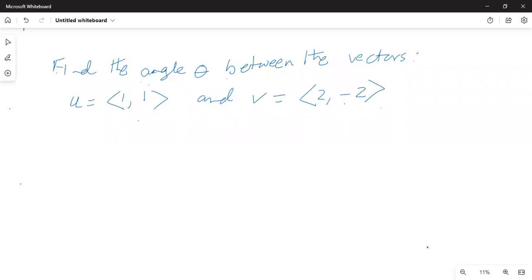It says find the angle theta between the vectors u given by the endpoints 1, 1 and v is equal to 2, minus 2.